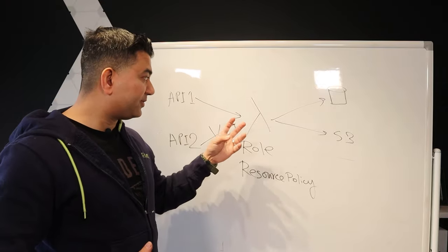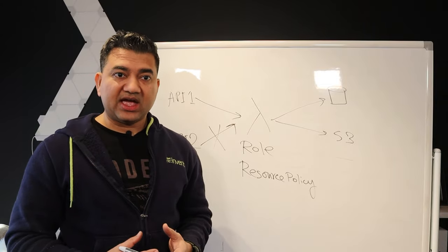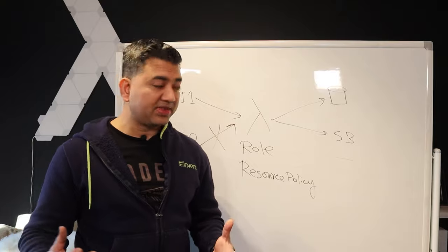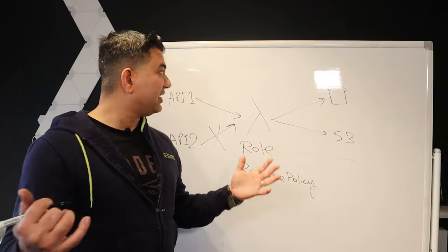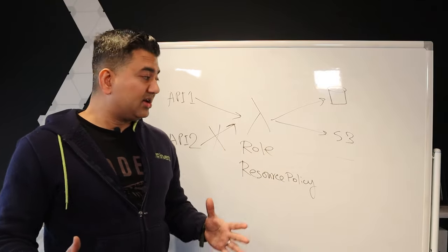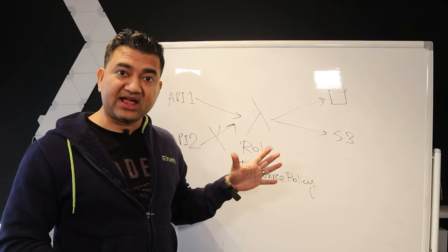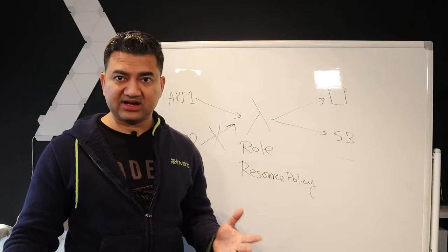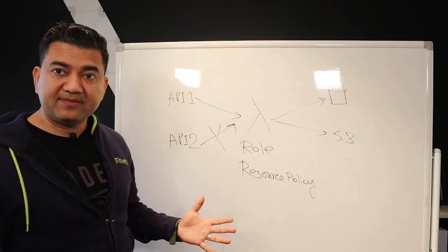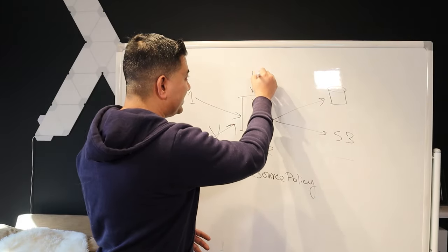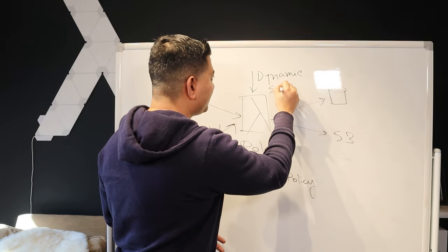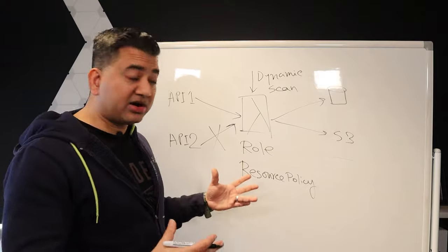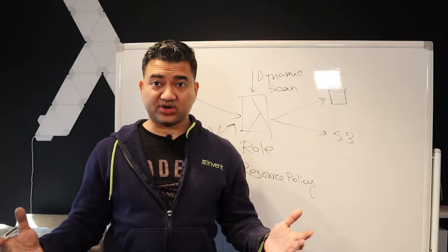Coming back to the actual code: your code will have programming packages, and there is a CVE — Common Vulnerability and Exposure — list that gets published. If a package like log4j suddenly becomes vulnerable, you need a way to detect if your Lambda has that package. You can dynamically scan your Lambdas using third-party tools like Prisma Cloud, Snyk, or Sysdig. As soon as a vulnerability is detected, you can shut down your Lambda, remediate it, or alert someone and take action.